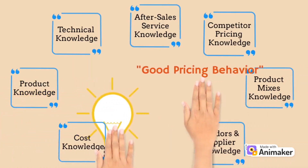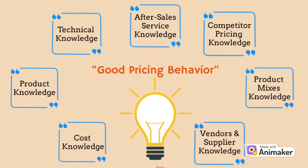We have good pricing behavior. Firstly, we have cost knowledge. Costs are expenses required to produce or sell a product or prepare an asset for normal use. Secondly, product knowledge. Product knowledge is the information needed to clearly explain the product to the customer. Thirdly, technical knowledge. Technical skills are specific knowledge and expertise required to perform specific tasks and use specific tools. Other than that, they also have after-sales service knowledge, competitor pricing knowledge, product mixes knowledge, and lastly, vendors and supplier knowledge.